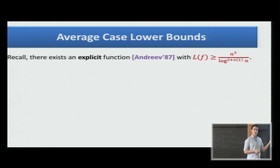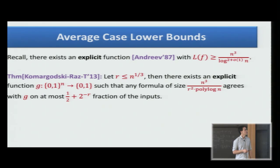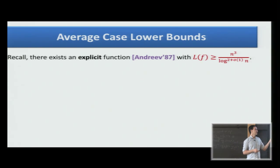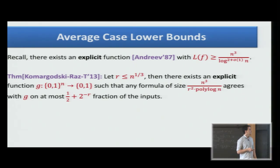The second work that I want to talk about is average case lower bounds for De Morgan formulas. Recall that the best known lower bound for an explicit function is n cubed over log squared n. This is a function introduced by Andreev, and this analysis is by Håstad and us. Together in a joint work, we showed a strengthening of this result. We showed that there exists an explicit function g such that any formula of size n cubed over r squared polylog n agrees with g on at most half plus 2 to the minus r. Here we have some parameter r that we can choose as we like. Think of it, let's say, as n to the epsilon. So here we get roughly n cubed, like n to the 3 minus 2 epsilon. And here we have something very close to half, like exponentially close to half. So it is stronger because not only we cannot compute it on all inputs, we cannot compute it on roughly more, slightly more than half.